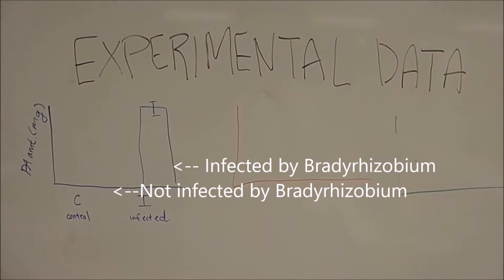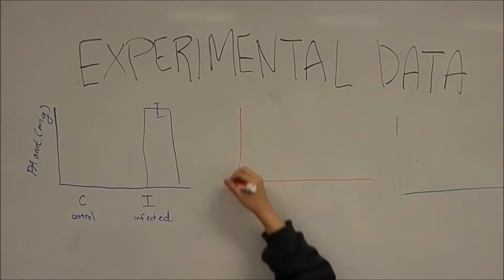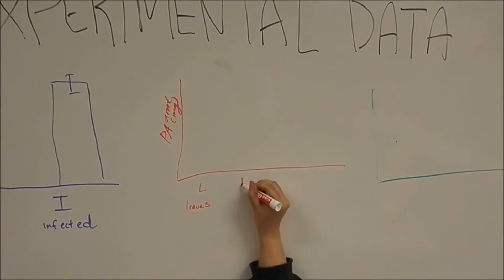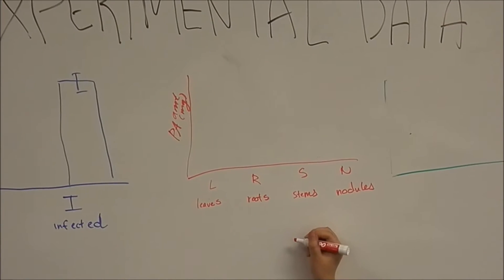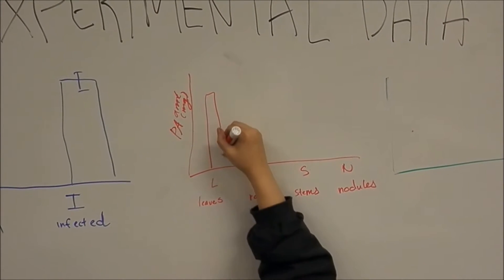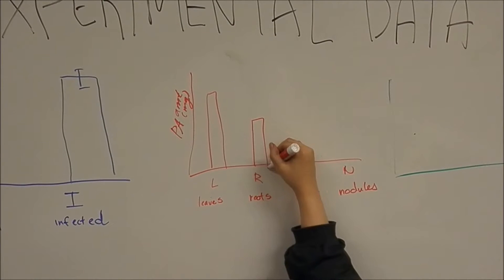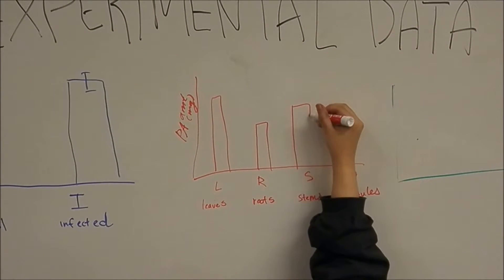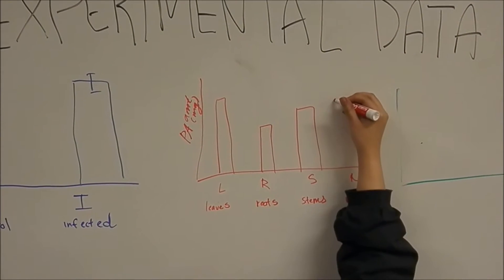The experiment first illustrated that PA biosynthesis is triggered by nodulation by comparing PA levels in plants with and without nodules. As you can see in the figure, the group of control plants, uninfected with the microsymbiont Bradyrhizobium and therefore without nodules, had negligible levels of PAs when compared to the infected plant.